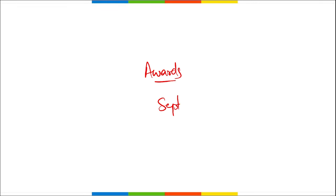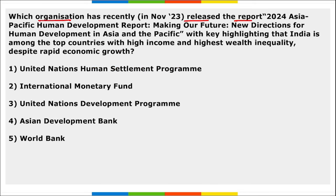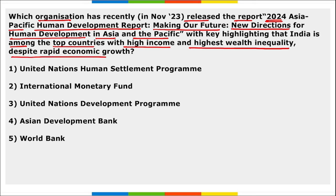Those were the important current affairs for the topic of awards for the September month. If you found the session interesting, do like the video and comment below. Moving to some revision current affairs: which organization recently released the 2024 Asia Pacific Human Development Report titled 'Making Our Future: New Directions for Human Development in Asia and the Pacific', highlighting that India is among the top countries with high income and the highest wealth inequality despite rapid economic growth?